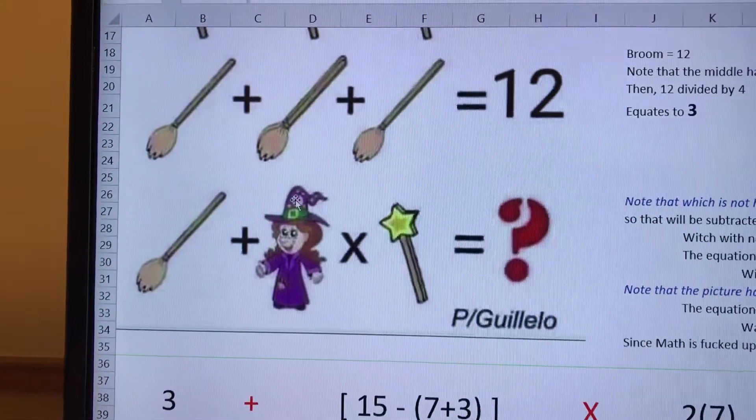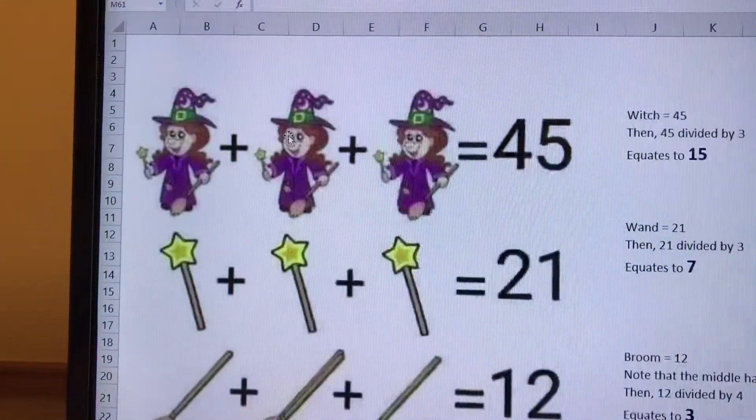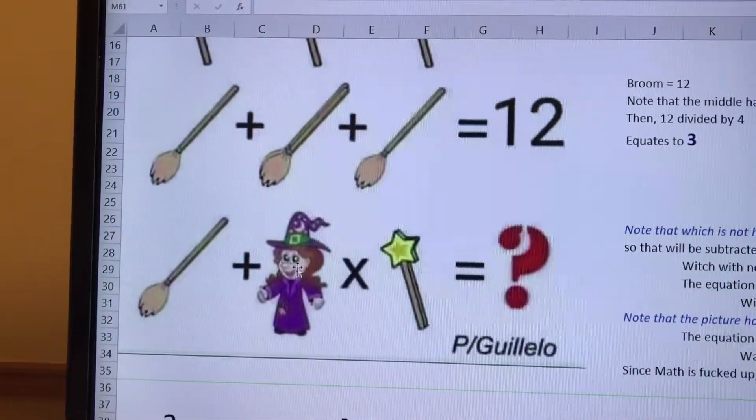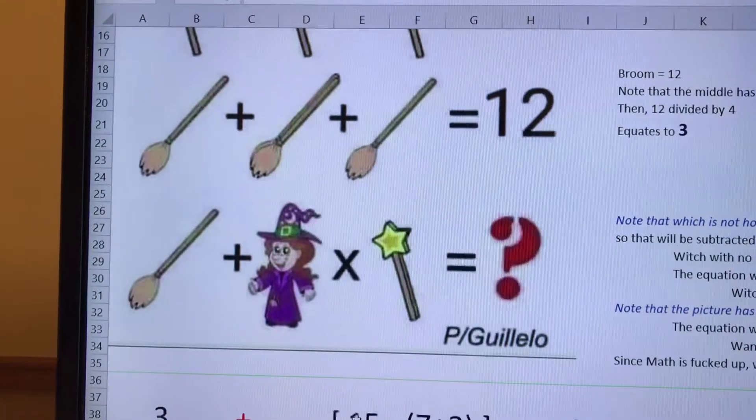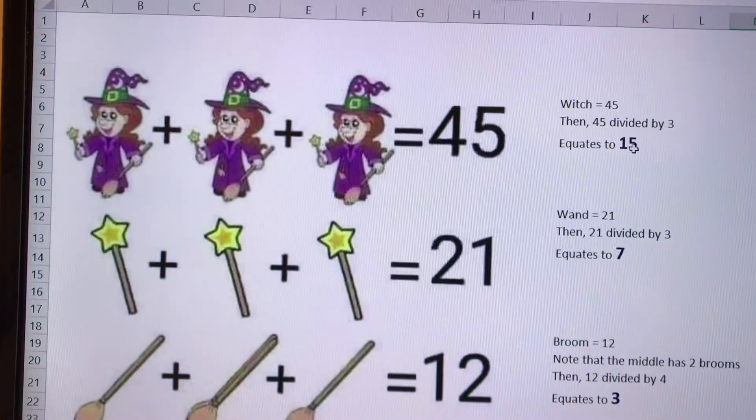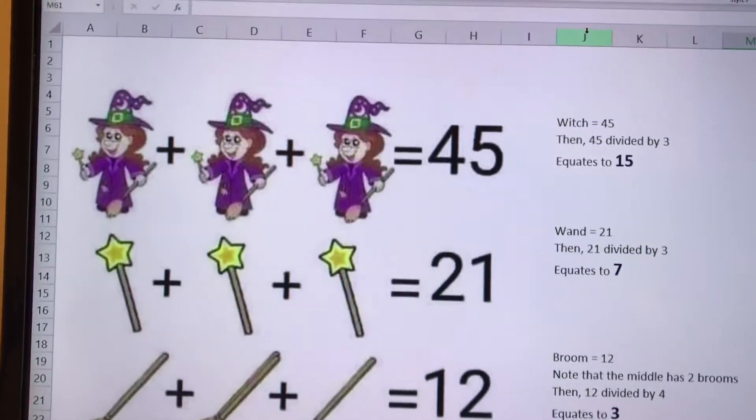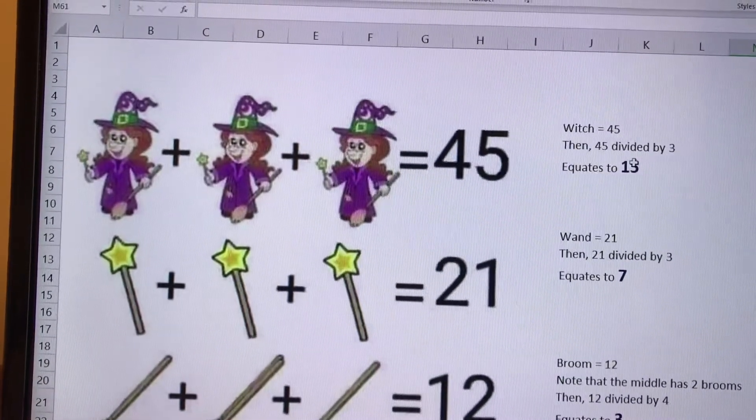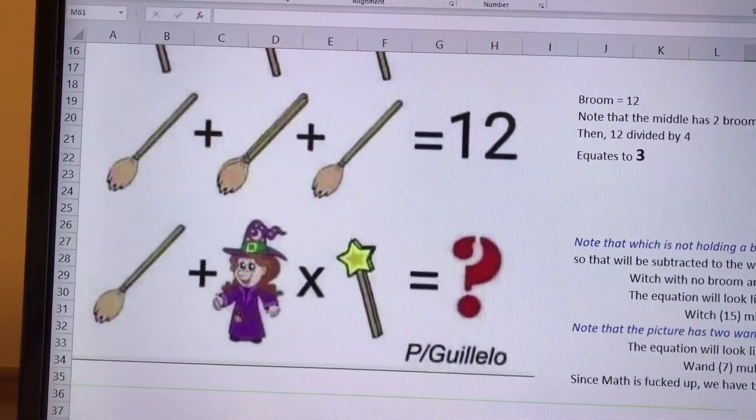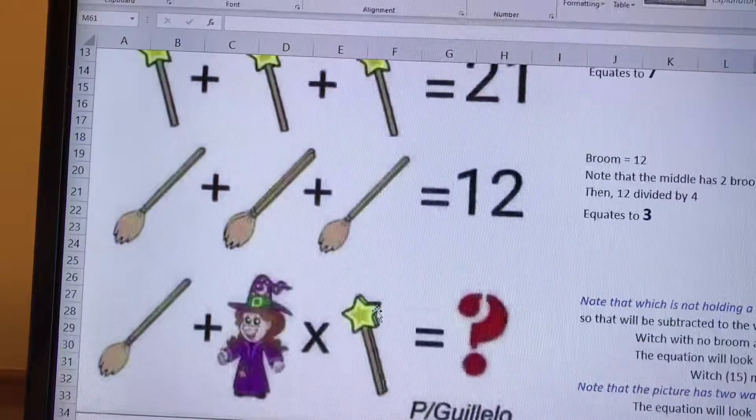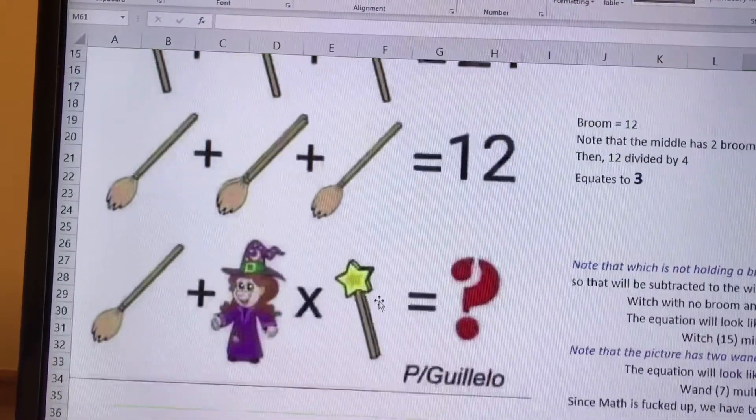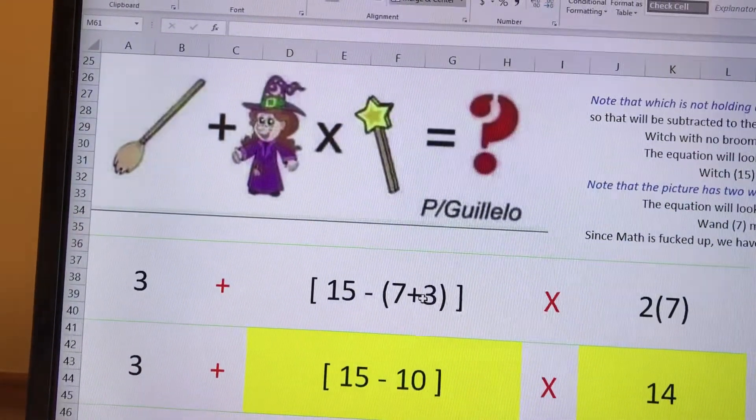So what I did is the witch with the broomstick and a wand has a broomstick and a wand, so that's 15 total each witch. On the right side you can see that's 15 each witch with the broomstick. What I did is I removed the broomstick and the wand.